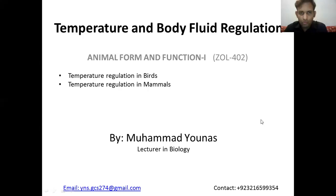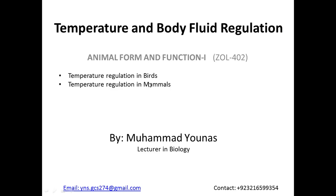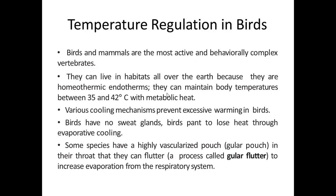Bismillahirrahmanirrahim. Today's topic is temperature regulation in birds and mammals. First, let's talk about temperature regulation in birds, and then talk about temperature regulation in mammals. Birds and mammals are highly active animals compared to other vertebrates and invertebrates. They maintain their body temperature from 35 to 42 degrees. They are homeothermic and endothermic, maintaining their body temperature within a range.